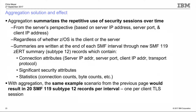Aggregation addresses this by summarizing the repetitive use of security sessions over time. From the server's perspective, we look at the server IP address and port plus the client IP address — but not the client port, since that's typically an ephemeral port that changes each connection. We then summarize whether the server resides on the local z/OS system or at the remote end, and look for repetitive use of a given TLS session, IPsec tunnel, or other security session between those two endpoints.